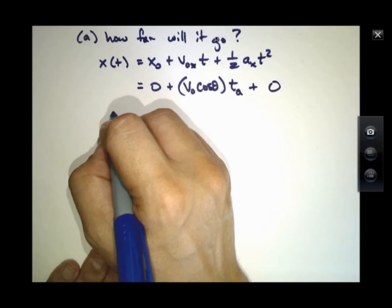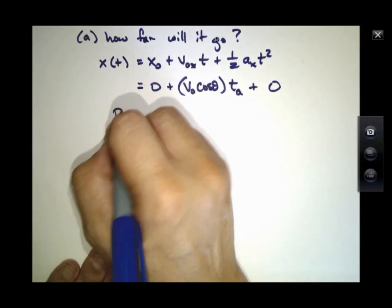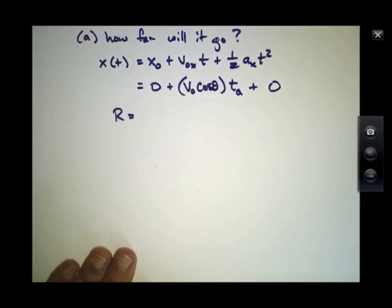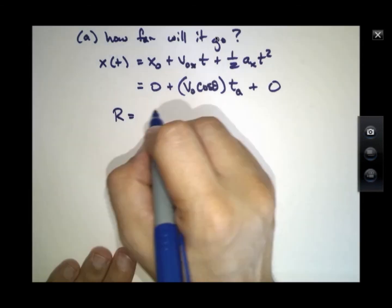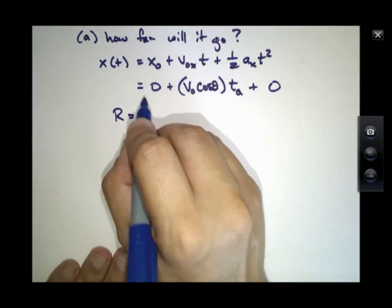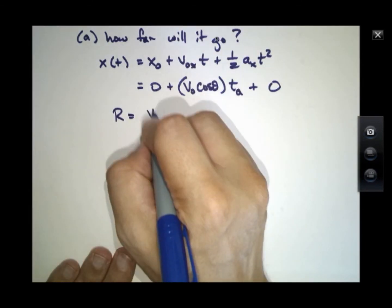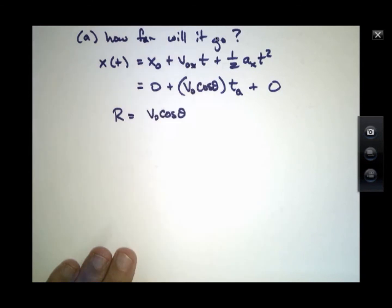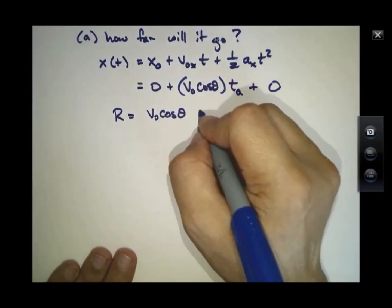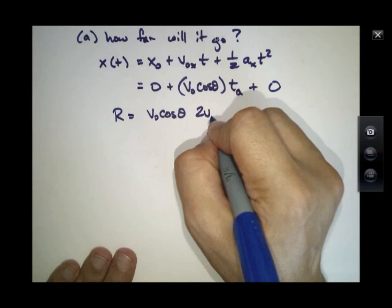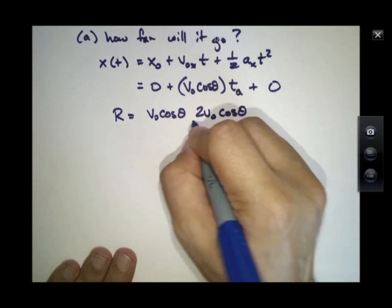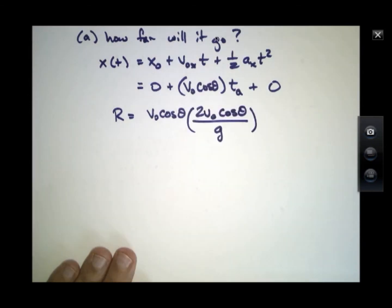So this total x, which we'll call the range when the ball strikes the ground again, is v0 cosine theta times the time for the ball to reach the ground.